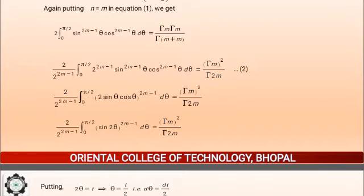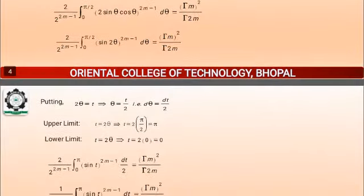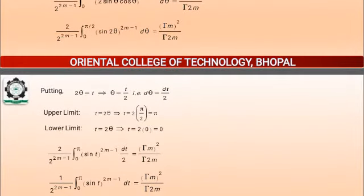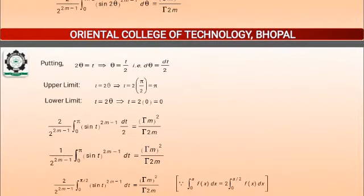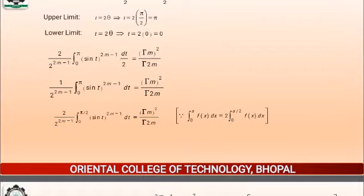This gives 2 upon 2^(2M-1) times the integral from 0 to pi/2 of sin^(2M-1)(2theta) d-theta, equal to Gamma(M)² upon Gamma(2M). If we put 2theta = t, we have theta = t/2 and d-theta = dt/2, and the limits become 0 to pi. The integral becomes 2 upon 2^(2M-1) times the integral from 0 to pi of sin^(2M-1)(t) dt upon 2, equal to Gamma(M)² upon Gamma(2M). Using the property that the integral from 0 to 2A of f(x) dx equals twice the integral from 0 to A of f(x) dx, we can write this as 2 upon 2^(2M-1) times the integral from 0 to pi/2 of sin^(2M-1)(t) dt equals Gamma(M)² upon Gamma(2M).